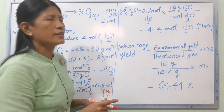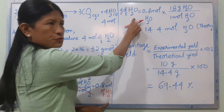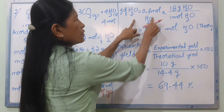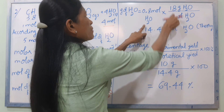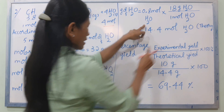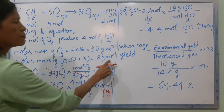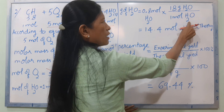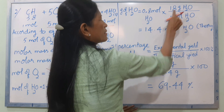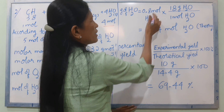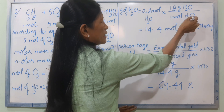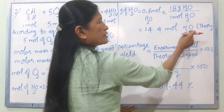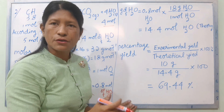18 gram per mole, so we have 18 gram per mole. 18 gram of H2O, 1 mole H2O, and 0.8 moles of H2O gives 14.4 grams — the theoretical yield of H2O.